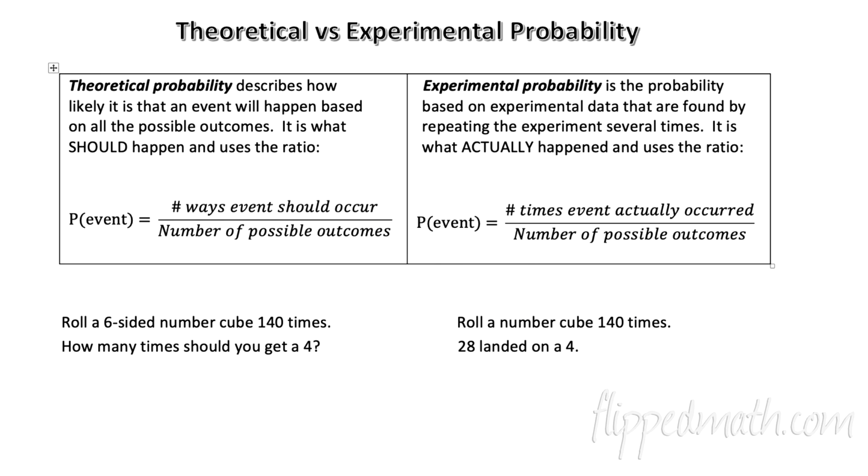Let's talk about theoretical versus experimental probability. Now, theoretical probability, that's in theory. This is what should happen. This describes how likely it is that an event will happen based on all the possible outcomes and how frequently they occur. It's what should happen. And it uses a ratio of the number of ways it should occur over the number of possible outcomes.